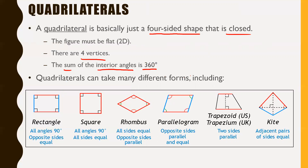Quadrilaterals can take many different forms — you need to know at least these six main forms. A rectangle has all 90-degree angles and opposite sides equal in length. A square is probably the easiest — all sides have the same 90-degree angles in the corner. A rhombus is basically just a square that someone sat on: all sides are equal, and opposite sides are parallel to each other.